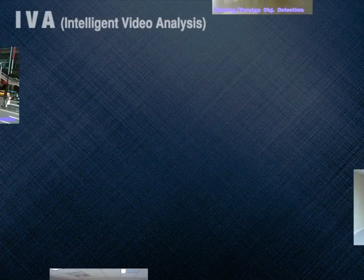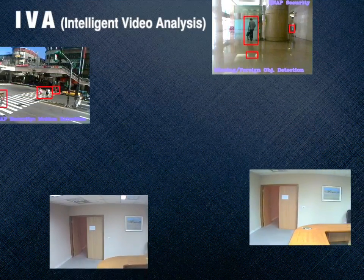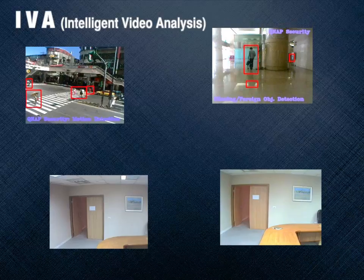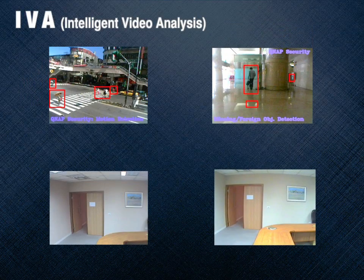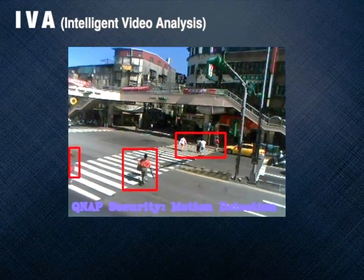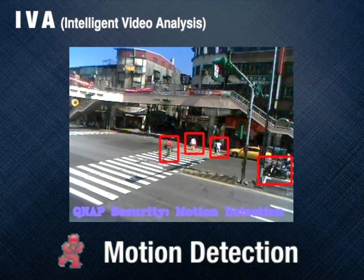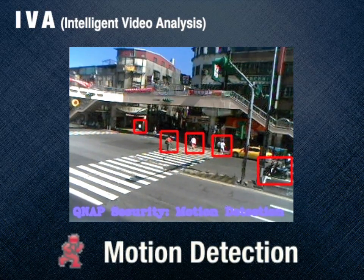QNAP NVR supports intelligent video analytics to allow the user to search video files efficiently. The time and effort for video search are largely reduced. It detects movement in the video, and moving objects are highlighted in red brackets.